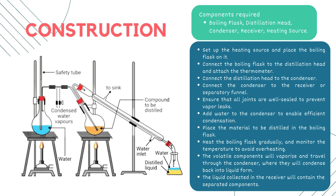We also need to link the condenser to the receiver or separatory funnel for collecting the distilled liquid, and enhance the condensation process by adding water to the condenser. Introduce the substance to be distilled into the boiling flask, then gradually heat it and carefully monitor the temperature to prevent overheating. Witness the volatile components transforming into vapor and moving through the condenser, which facilitates their return to liquid state. Finally, collect the separated components in the receiver — this completes the steam distillation assembly process.